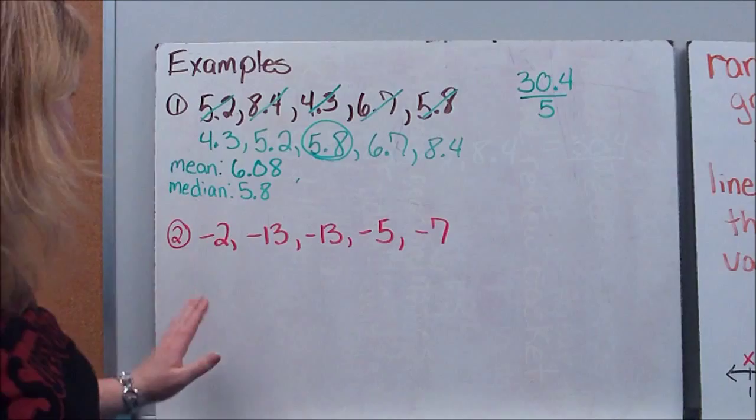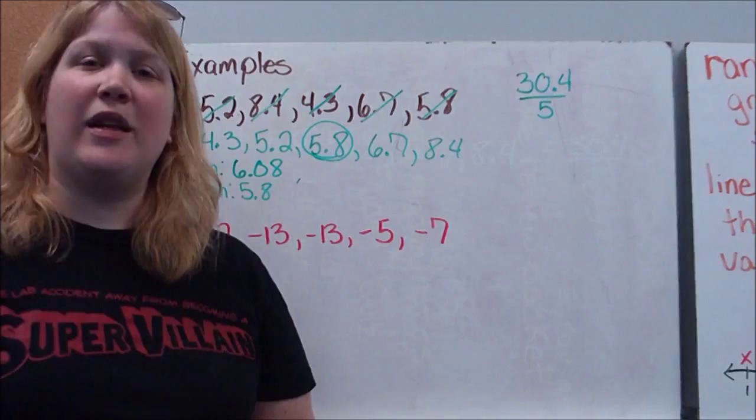If you have an even set of data, which I might on the next board, but not this one, there's going to be two numbers in the middle, and you'll have to take the average of those two numbers. So my median is 5.8.